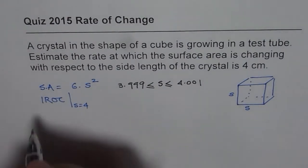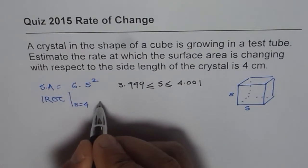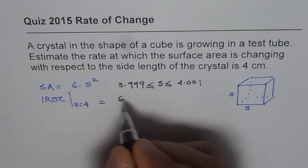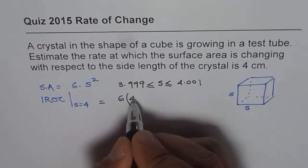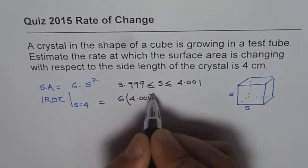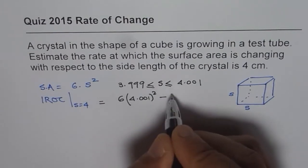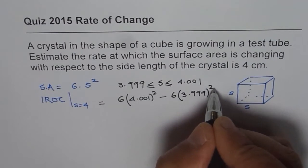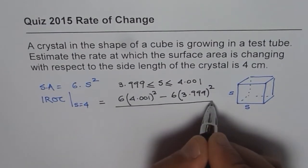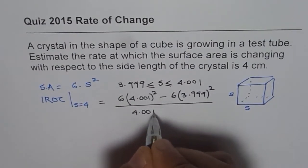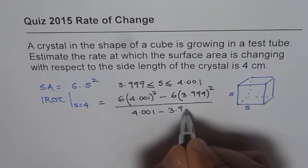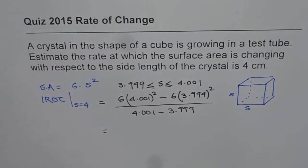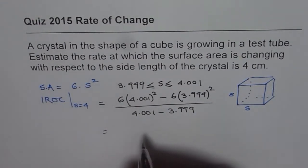That is to say that the instantaneous rate of change will be equal to 6 times, 6 is a constant, we can still write here, 6 times 4.001 square minus 6 times 3.999 square divided by 4.001 minus 3.999, right? You can use the calculator and calculate this value. So it comes to 48.